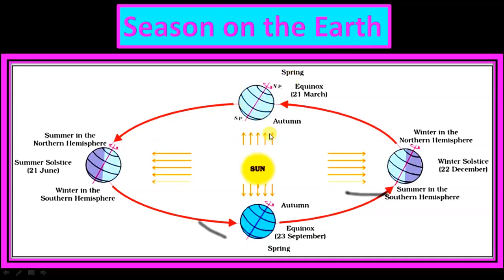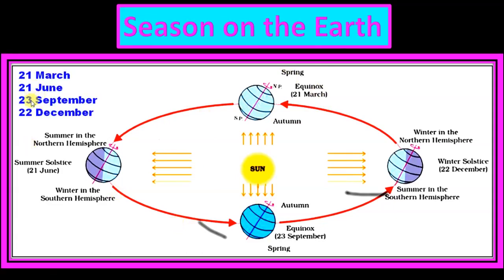Now, seasons on the earth. If you understand this diagram, we will know everything about seasons. The formula involves the dates: 21st March, 21st June, 23rd September, and 22nd December — each separated by 3 months.